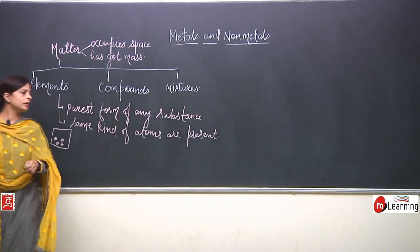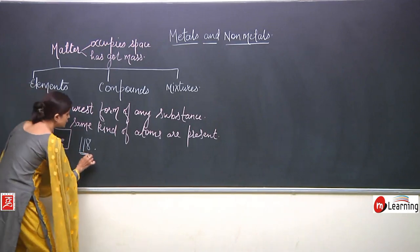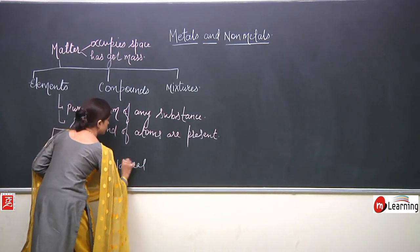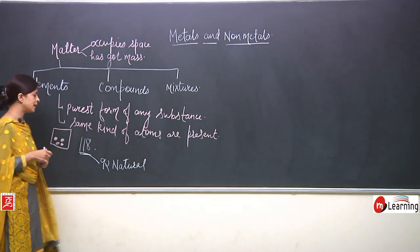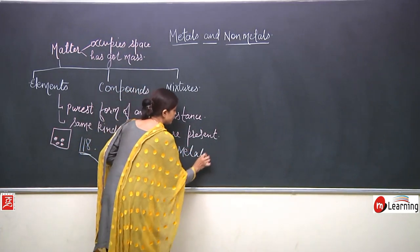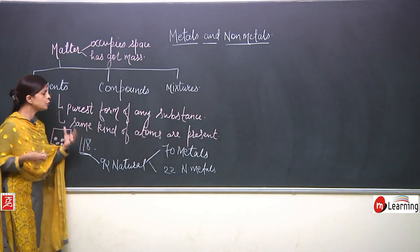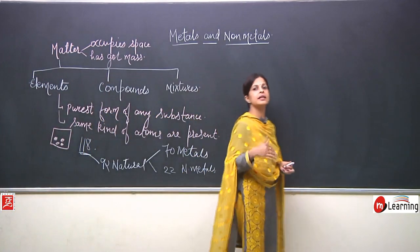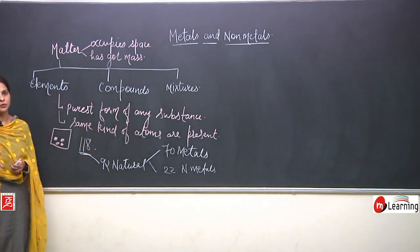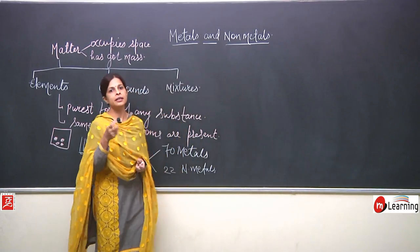In all there are 118 elements, out of which 92 elements are natural. Out of these 92 natural elements, 70 are metals and approximately 22 are non-metals. We can judge whether a particular element is a metal or non-metal on the basis of characteristic features, which we are going to study today. Before that, we will look at the classification given by the scientist named Lavoisier.